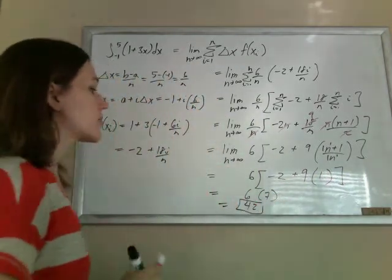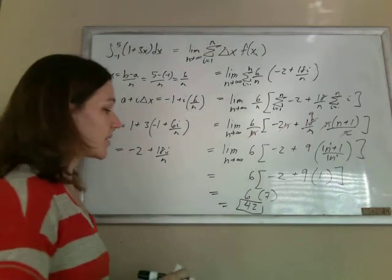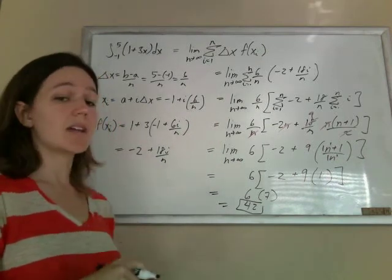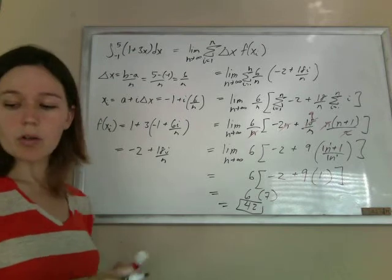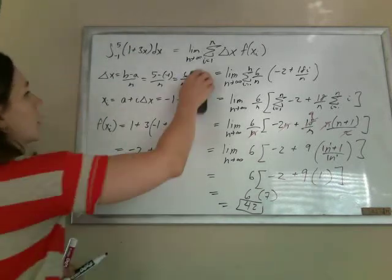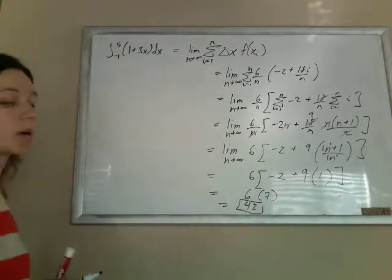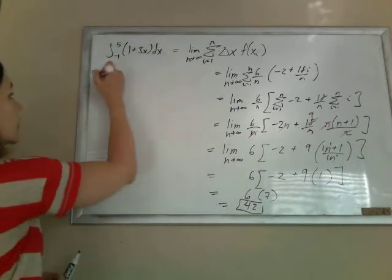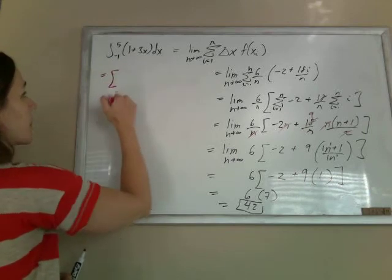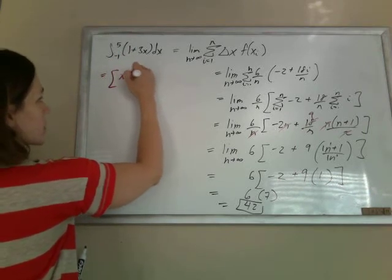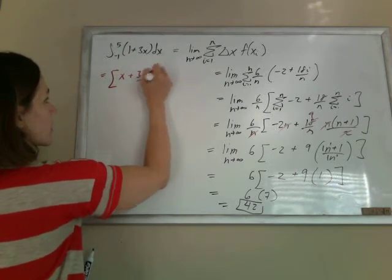All right. So, got an answer. We got it the long way with the definition. Let's check it the short way with our normal antiderivatives and Fundamental Theorem of Calculus Part 2, which sounds scary, but it's just what we're always using. We don't even know it. So, antiderivative is x plus 3x squared over 2.